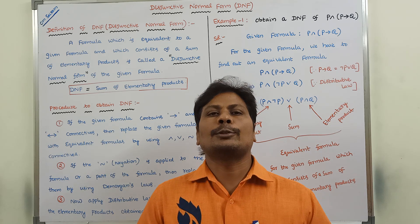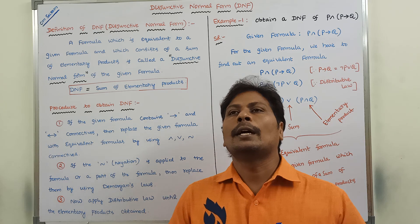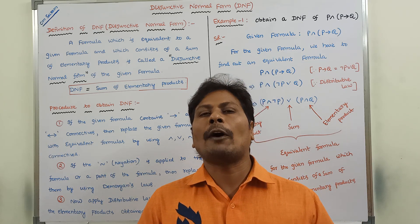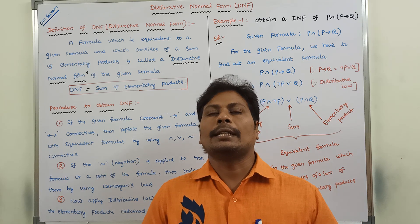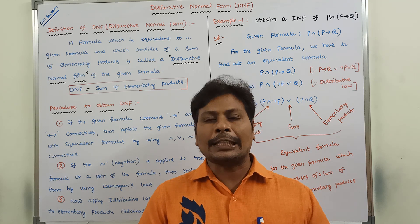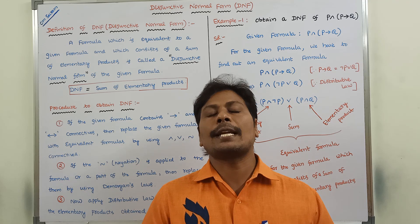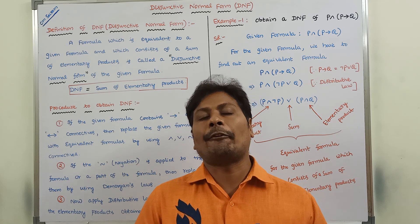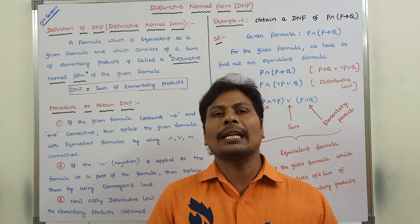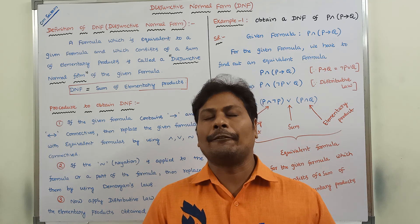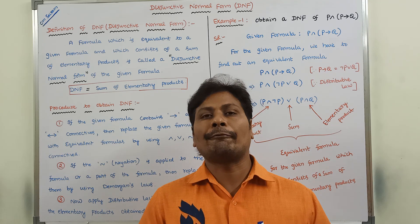Hi friends, today I am giving a lecture on one type of normal form called DNF. D stands for disjunctive, N stands for normal, F stands for form — disjunctive normal form. That is, we can simply call it as DNF. It is one type of normal form.